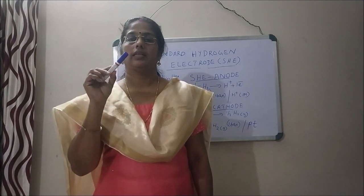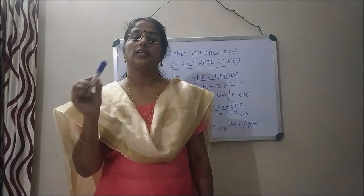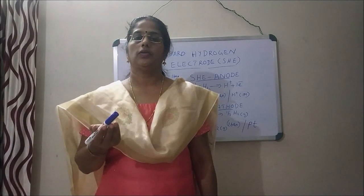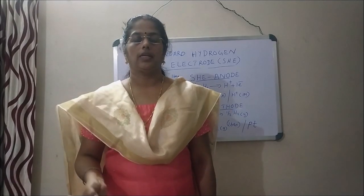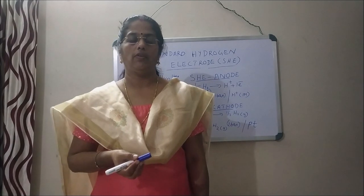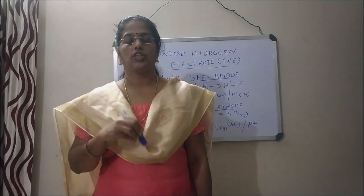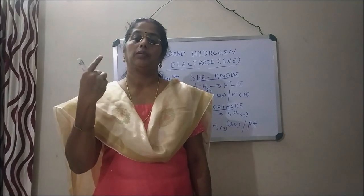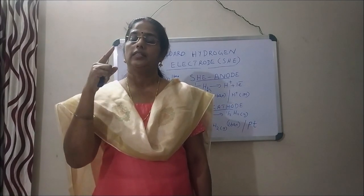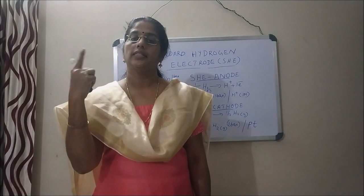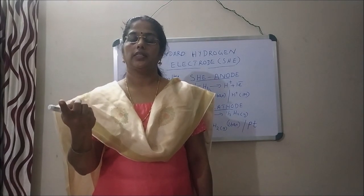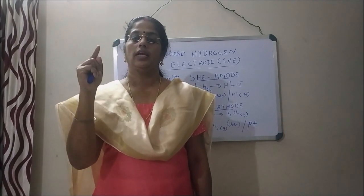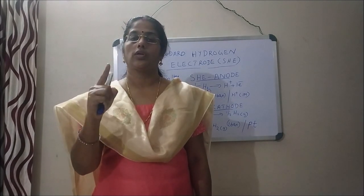The second application is that we can predict the reducing and oxidizing properties of the elements. For example, in the electrochemical series, fluorine gas has the highest reduction potential value, and the lithium ion has the lowest reduction potential value. Since fluorine has the highest reduction potential, it will undergo reduction — it will gain electrons. Therefore, fluorine can act as the strongest oxidizing agent, because the strongest oxidizing agent itself undergoes reduction.